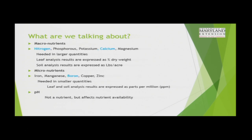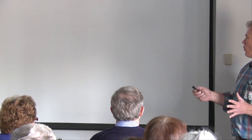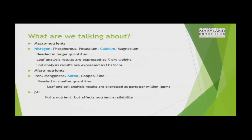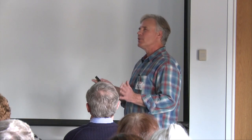We're talking about what they term macronutrients — the major elements we hear about most of the time, regardless of what crop you're growing: nitrogen, phosphorus, potassium, calcium, and magnesium. Plants require those in larger amounts, which is why we call them macronutrients. When you do leaf analysis, results are usually expressed as percentage of dry weight. Soil analysis usually comes back in pounds per acre. In contrast, micronutrients doesn't mean they're any less important — it's just that the plant uses them in smaller amounts.